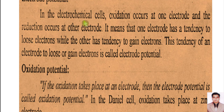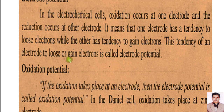Some electrodes have the potential to lose electrons and some electrodes have the potential to gain electrons. So if an electrode releases electrons — it loses electrons — we say that electrode has oxidation potential. The other electrode which has a tendency to gain electrons we say has reduction potential. So electrode potential is of two types: oxidation potential and reduction potential.